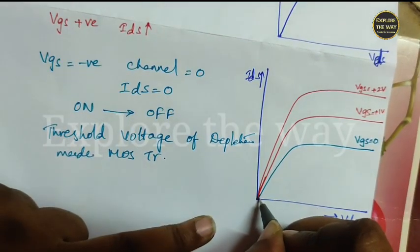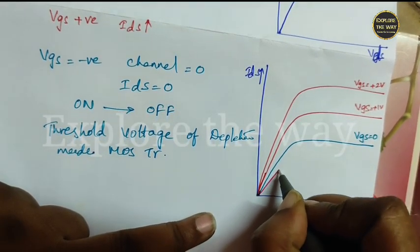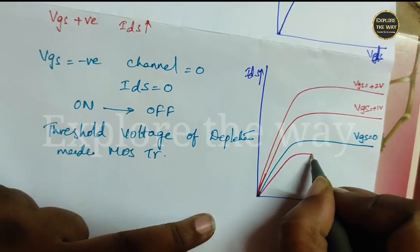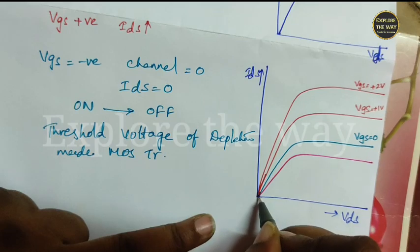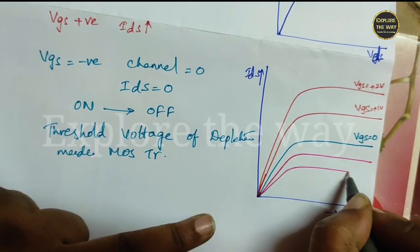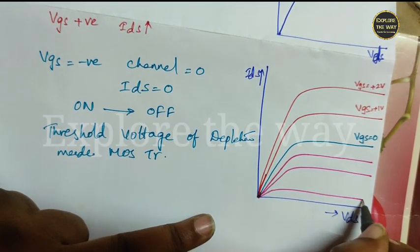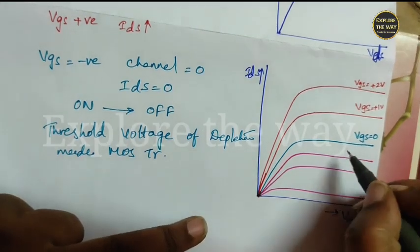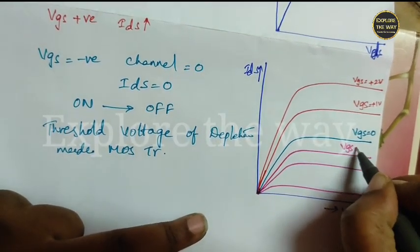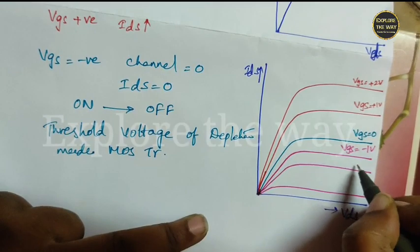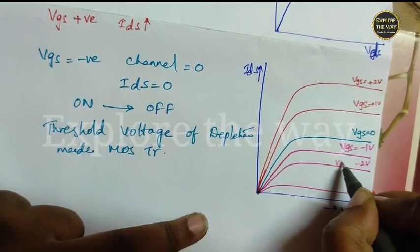When you make VGS negative, IDS also reduces. Its characteristics like this. Here, VGS is equal to minus 1 volt, minus 2 volts like this.